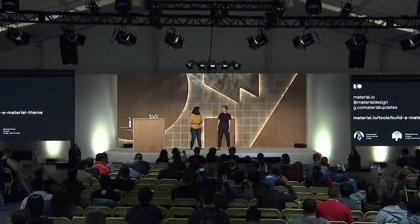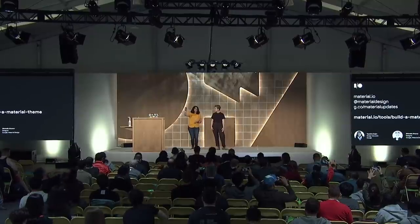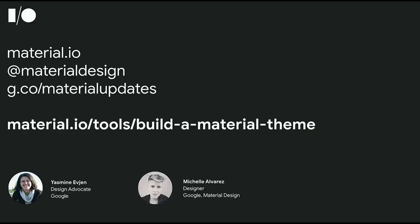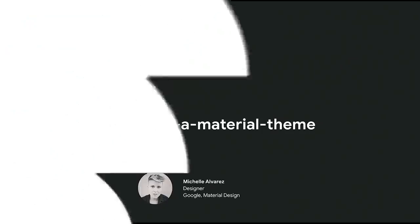We're also demoing the build a material theme in sandbox E, where you can print out your theme as well. We'll have Q&A in sandbox E in the box talk Q&A area. Go to material.io to find the latest, and follow @materialdesign to get the latest updates. Don't forget to try out those tools and share with us — we'd love to see what you come up with. Thanks so much, everyone, for joining.